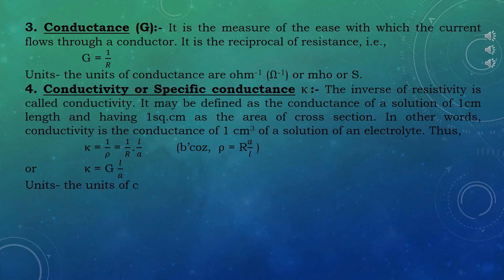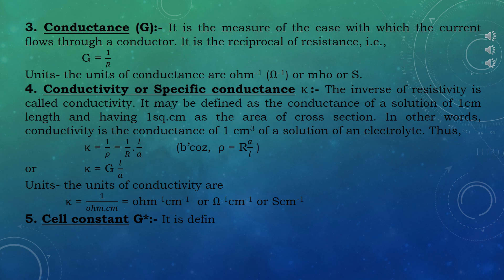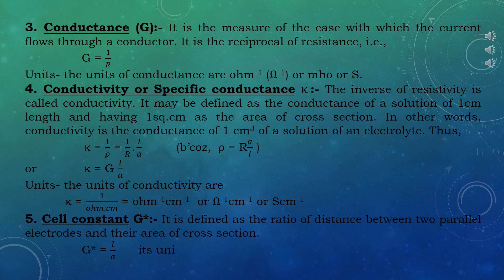The units of conductivity are the inverse of resistivity: κ equals 1/(Ohm·cm), or per Ohm per cm, or Siemens per cm. The fifth term is cell constant, represented by G*. It is defined as the ratio of the distance between two parallel electrodes and their area of cross-section, so G* equals L/A. Its units are cm⁻¹.